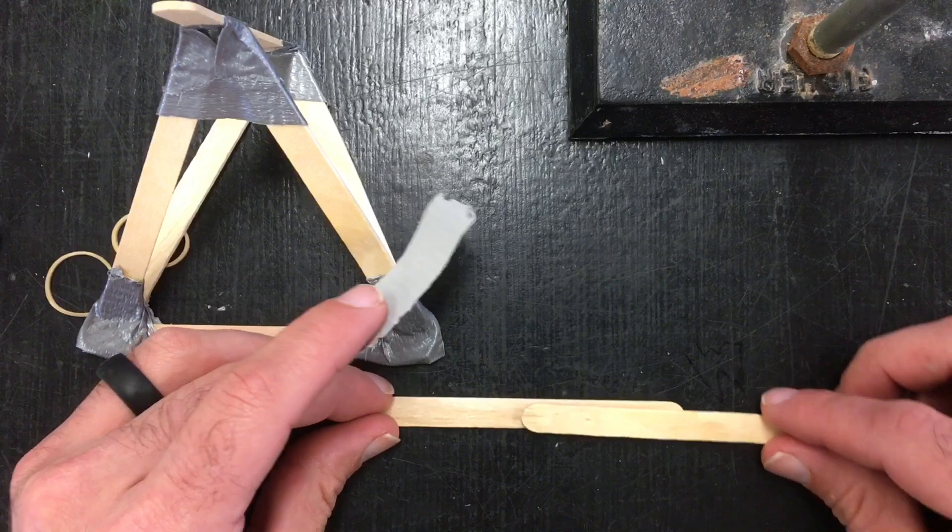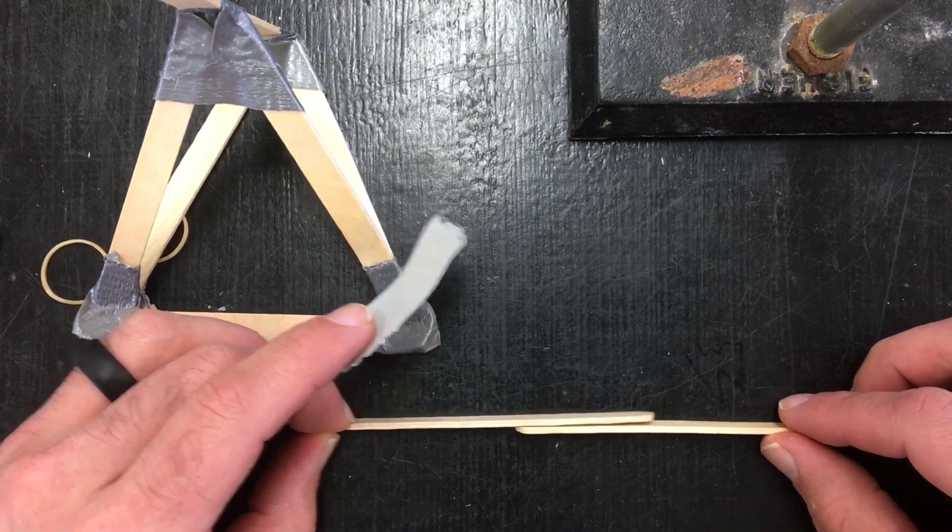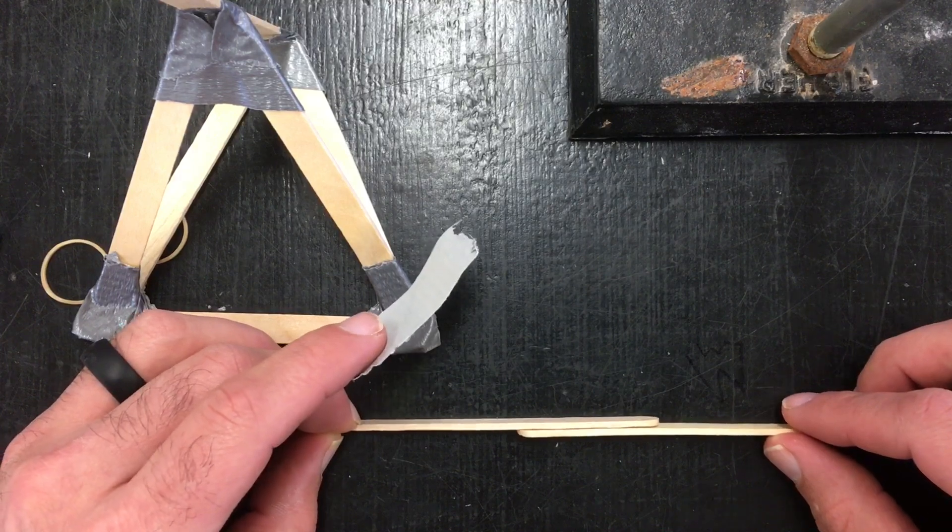The next step is you take two popsicle sticks. These make your throwing arm. And depending on how much you overlap them will determine the length of your throwing arm.